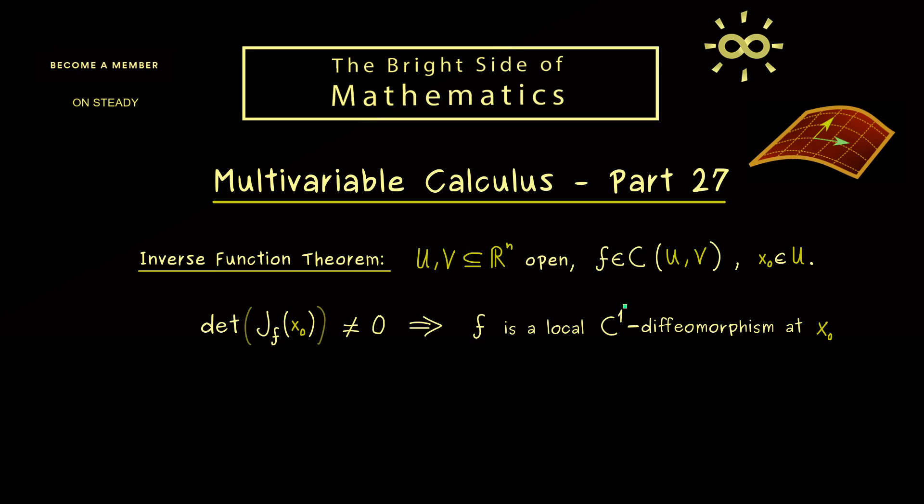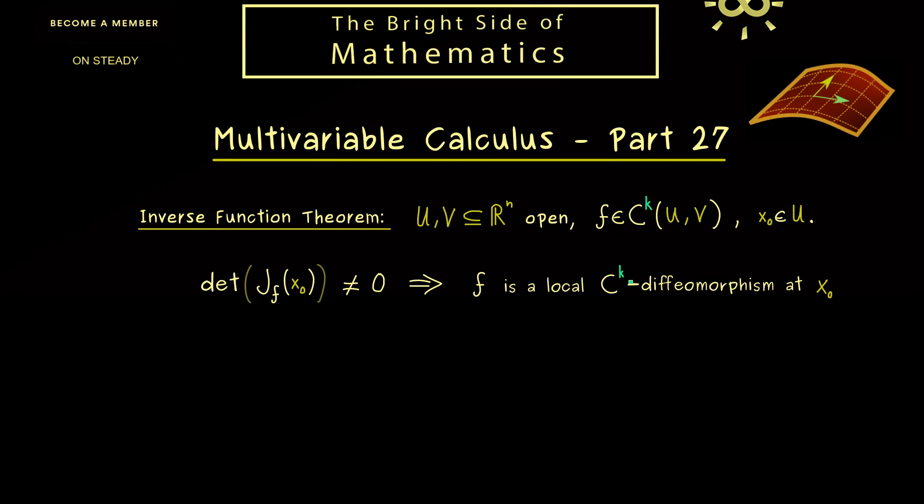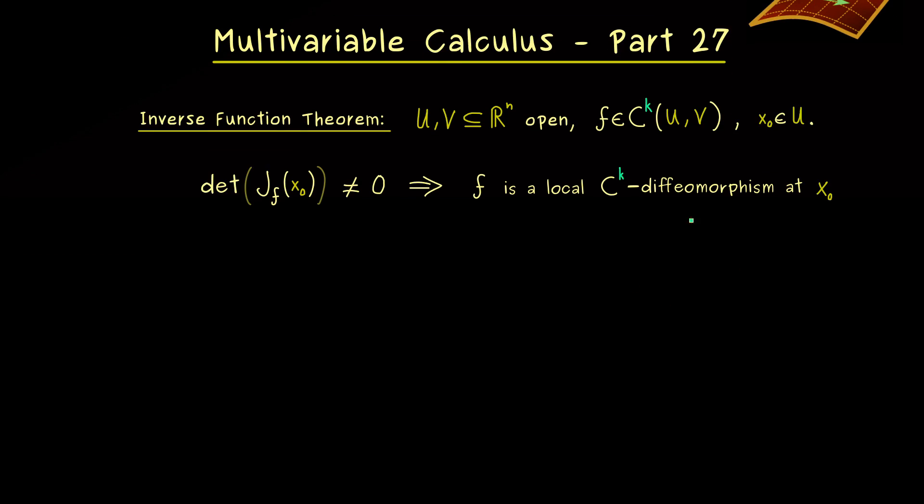But now we can generalize it to a Cᵏ diffeomorphism. Indeed, this is not a big problem because one can easily extend our proof by this fact as well. It's just the statement that the higher order of differentiability of f translates to the local inverse function as well.